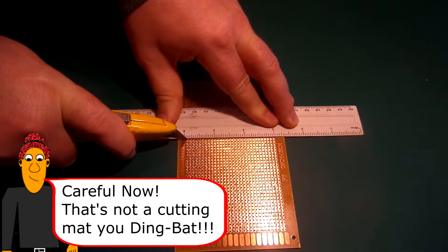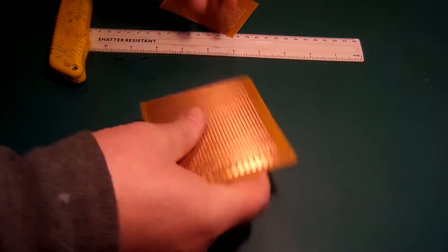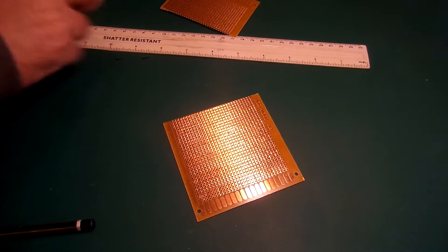It's easily cut by scoring with a craft knife and then just snapping. Note that they sell stripboard in 30 hole widths which means we don't have to make too many cuts.